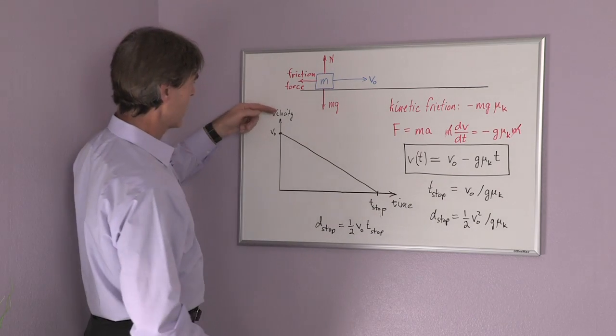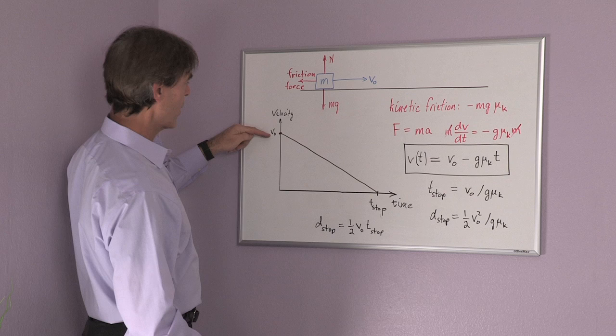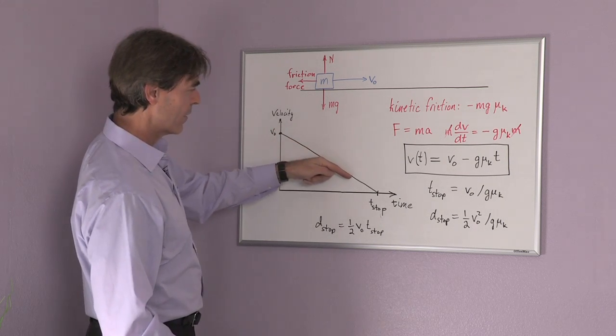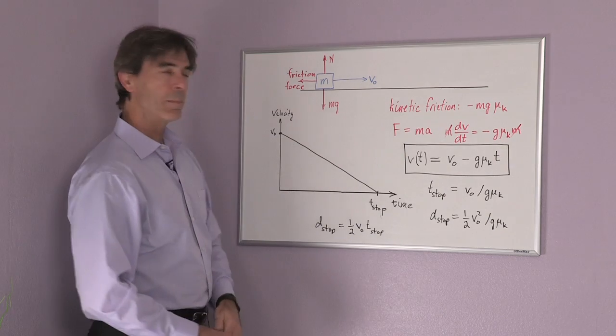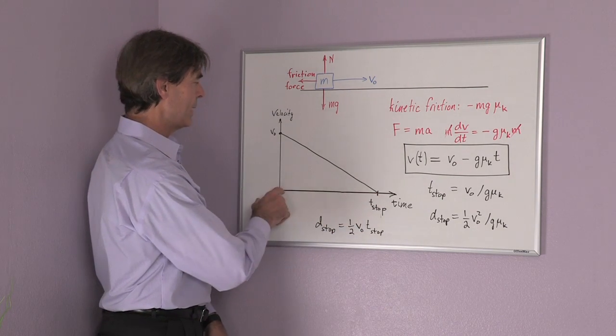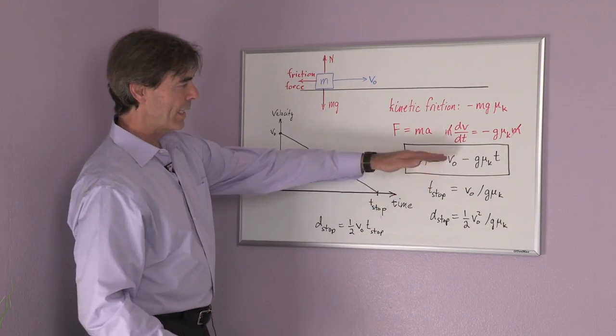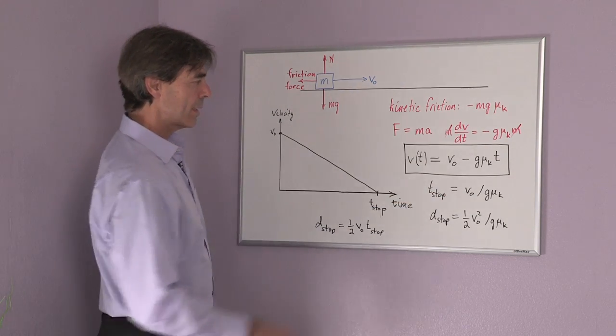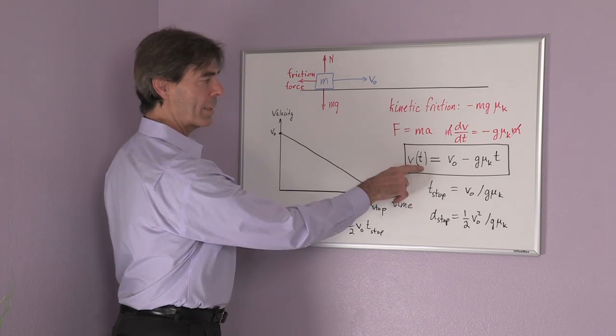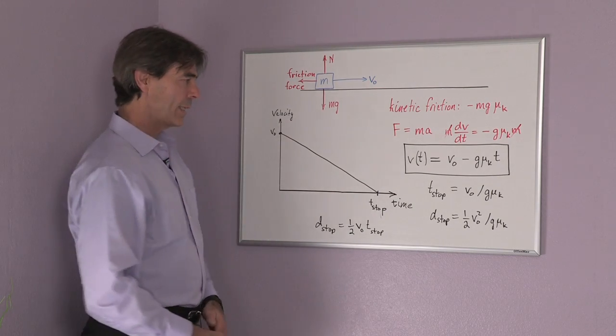If we drew a graph of this, this shows the velocity as a function of time starting off at v0. With time we decrease our velocity until we come to the time t-stop, which means the velocity is zero. That can be calculated again from this formula if we set v of t-stop equal to zero.